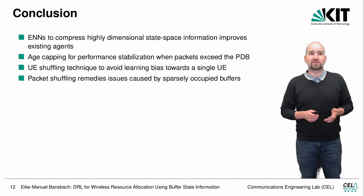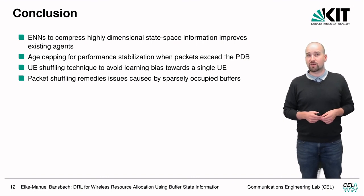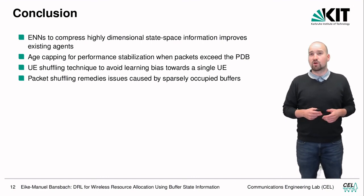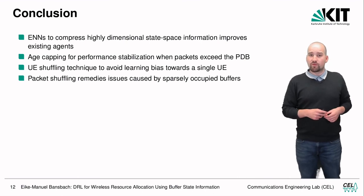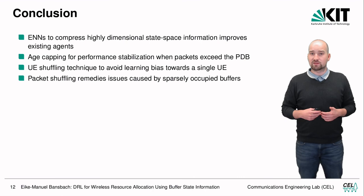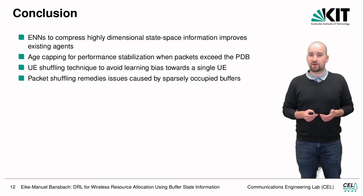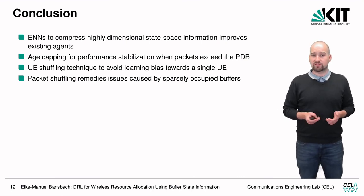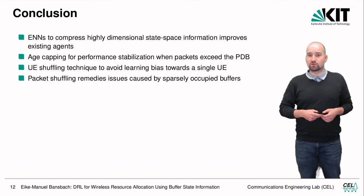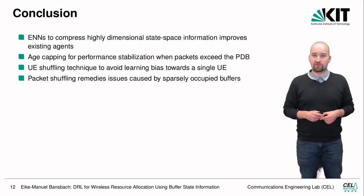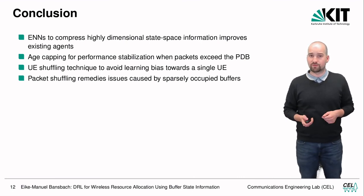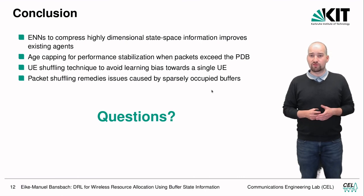In conclusion, ENNs can compress highly dimensional state space information, improving existing agents. Age capping stabilizes performance when packets exceed the packet delay budget. We introduced two shuffling techniques: user equipment shuffling to avoid learning a bias toward a certain action, and packet shuffling to remedy issues caused by sparsely occupied buffers. Thank you for your attention — feel free to ask any questions.